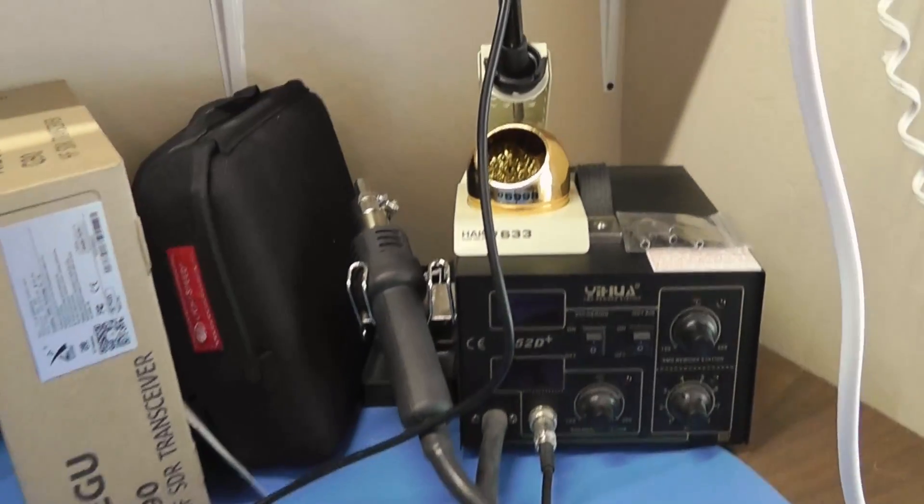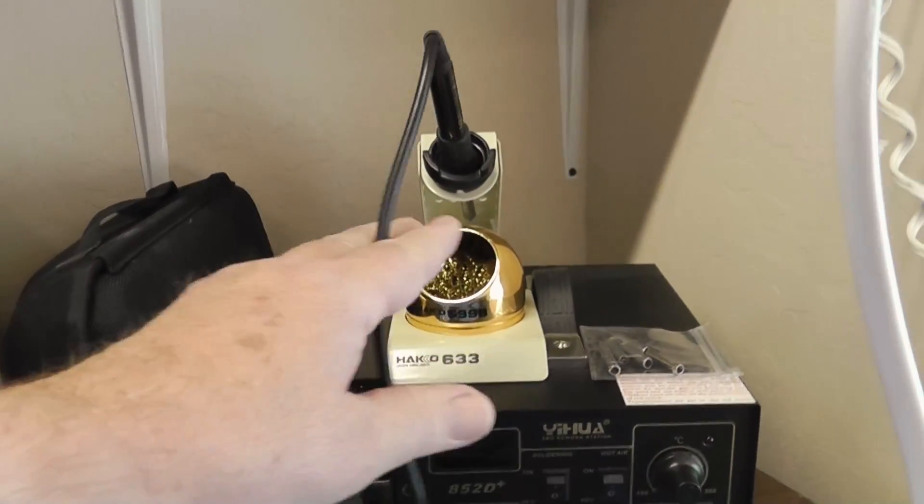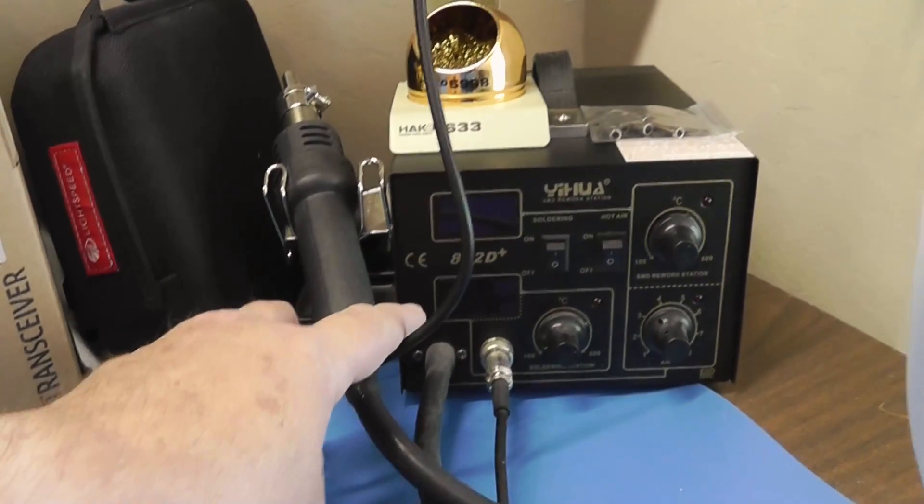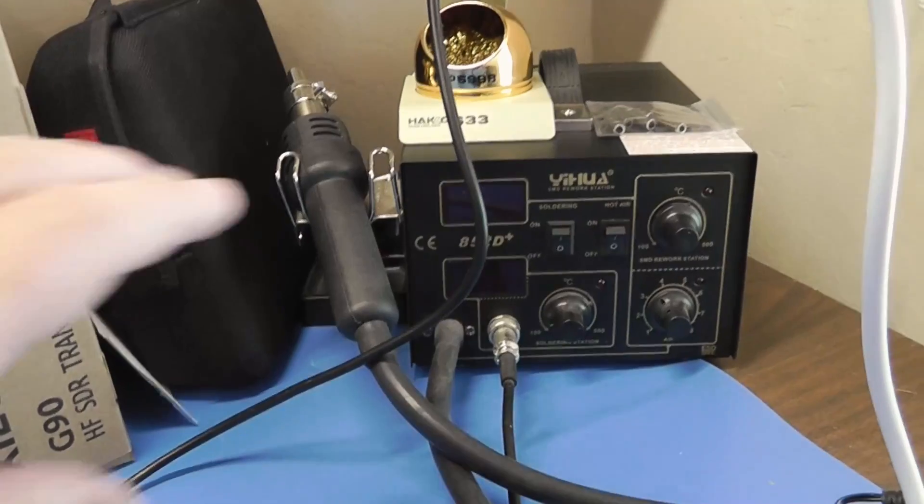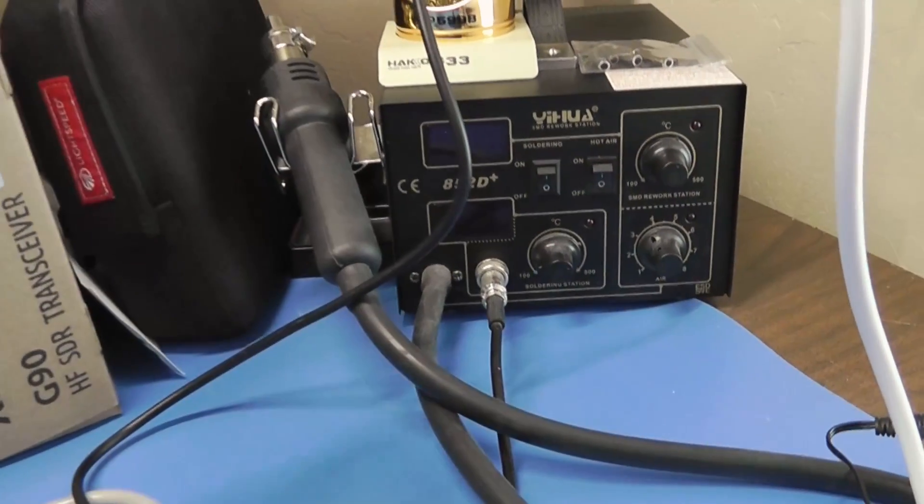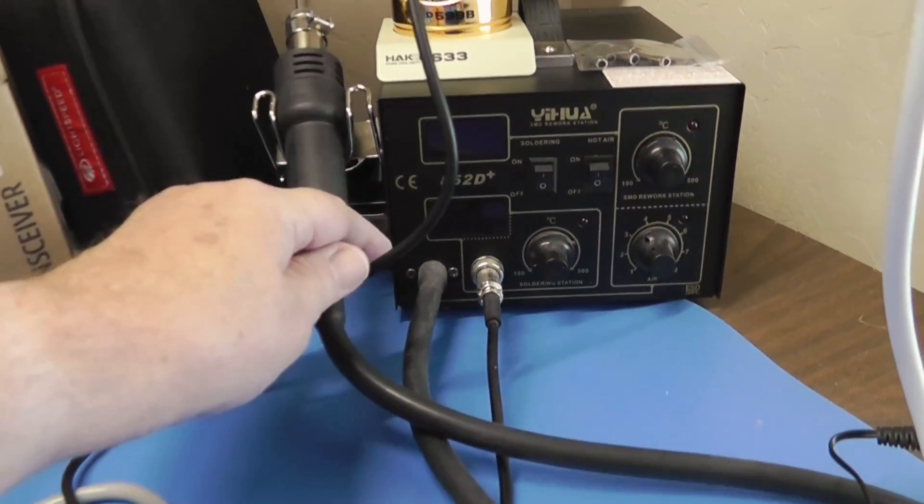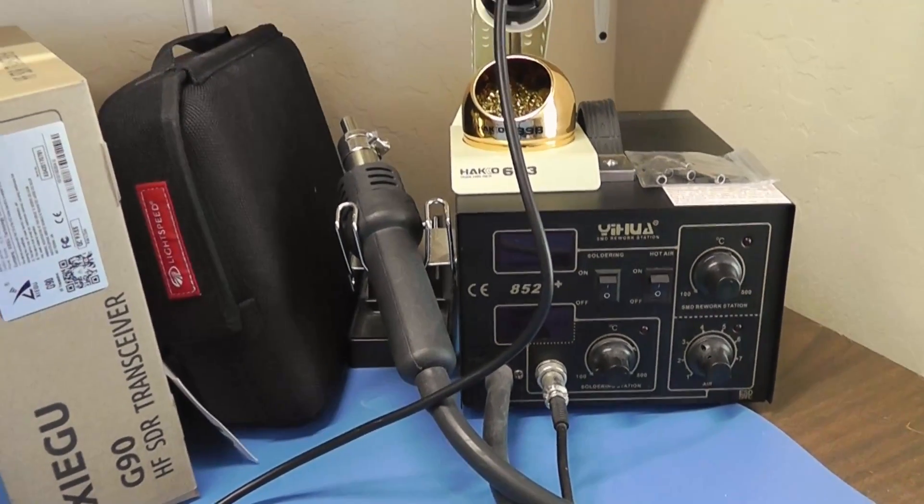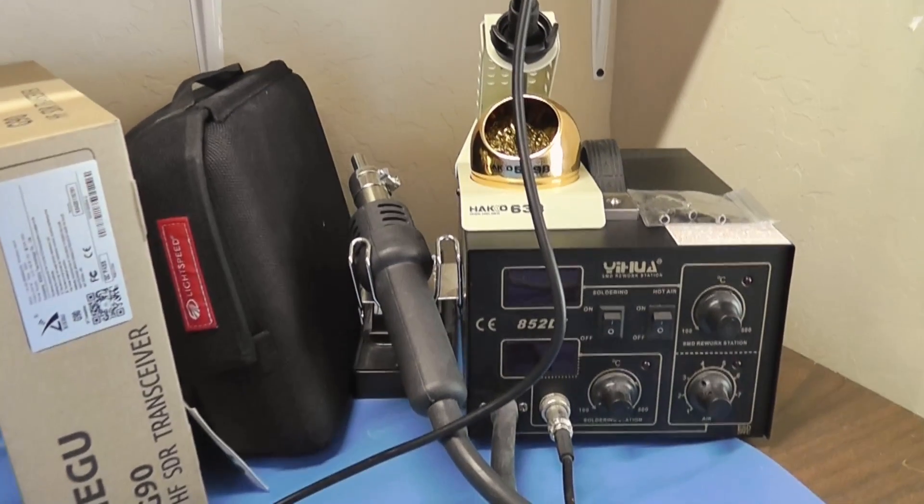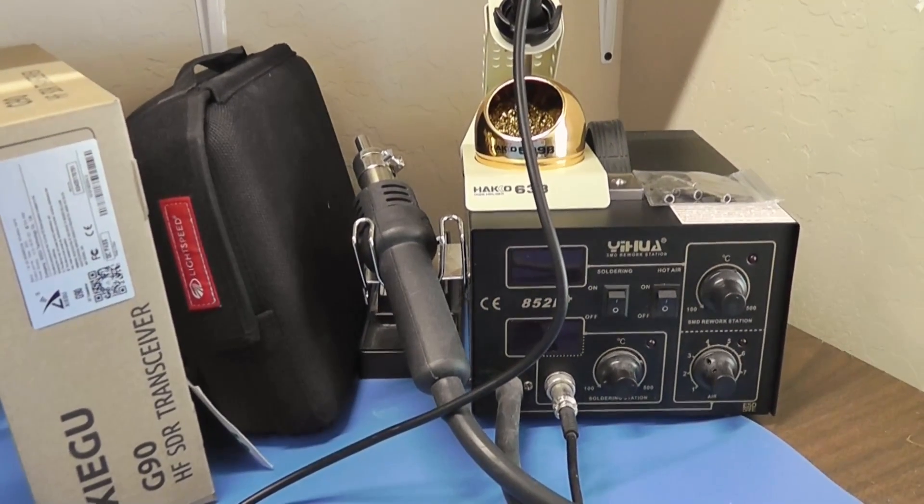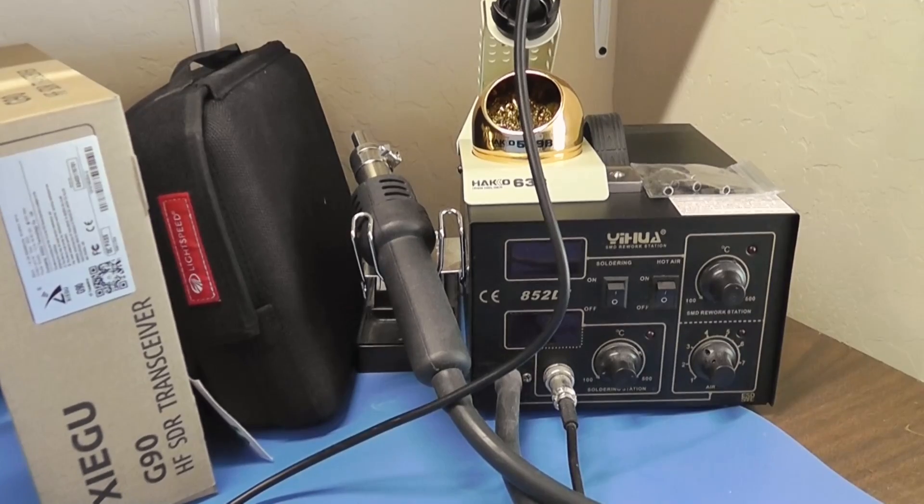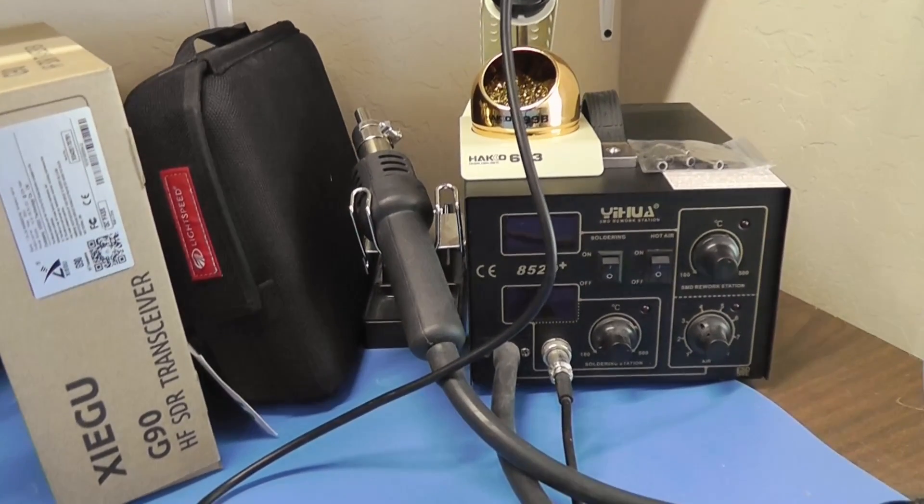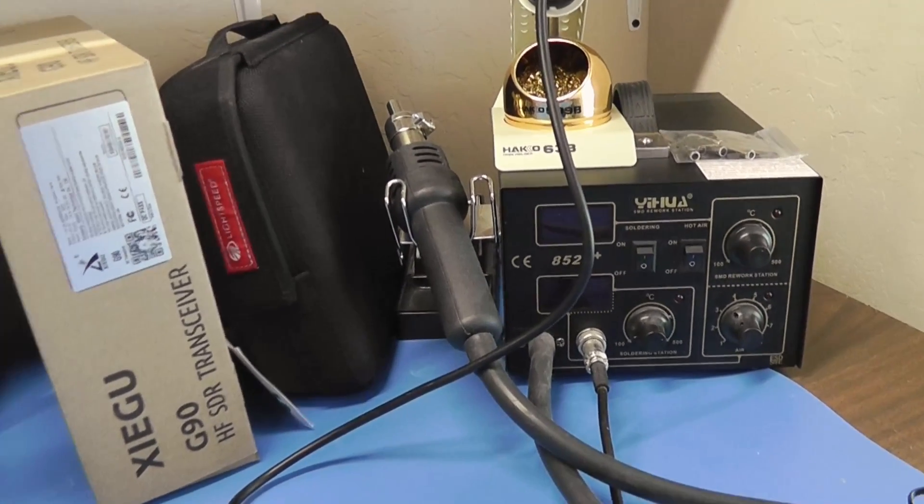The soldering station itself consists of the soldering iron and a base unit that keeps it at a constant temperature. This is called a rework station because it also has an air gun here that is used for surface mount components if you want to do that. But you don't need to use that part at all. I do. And we're going to use it a little bit later on to do some heat shrink tubing.